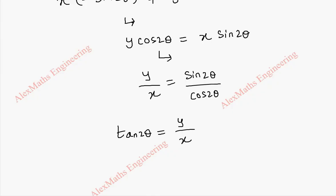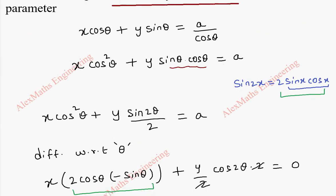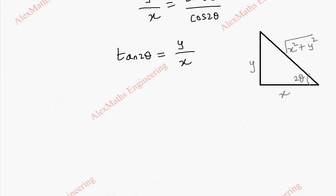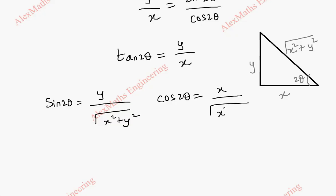Now we can use the triangle method. We plot 2θ in a right triangle where the opposite side is y and the adjacent side is x. By the Pythagorean relation the hypotenuse is √(x² + y²). We need to eliminate theta, so we find sin2θ and cos2θ from this diagram: sin2θ = y/√(x²+y²) and cos2θ = x/√(x²+y²).